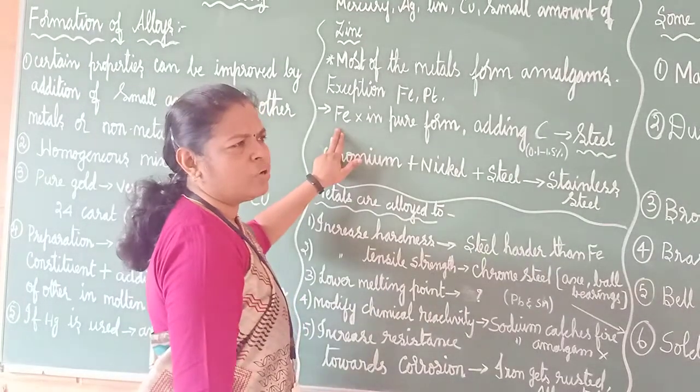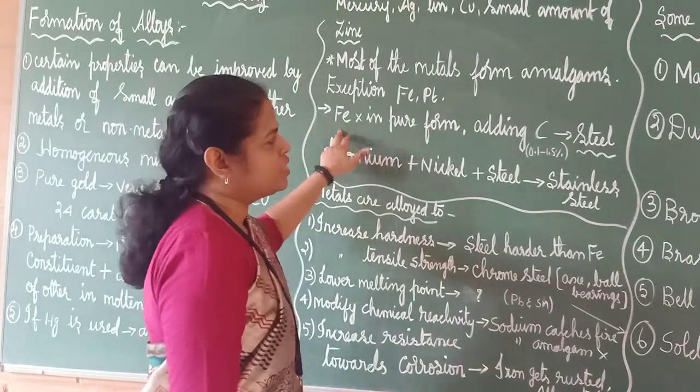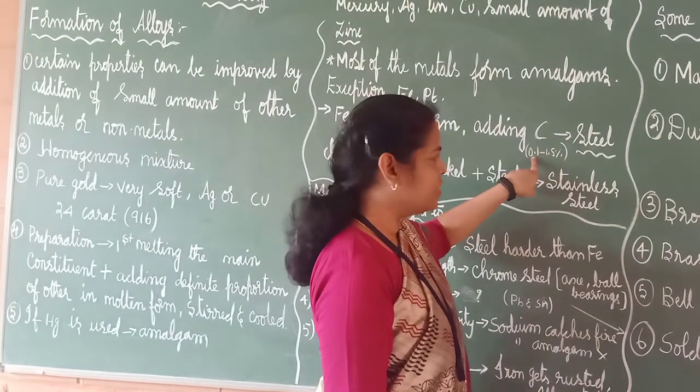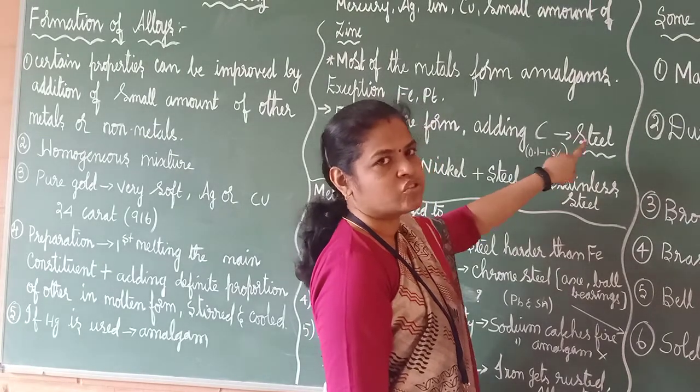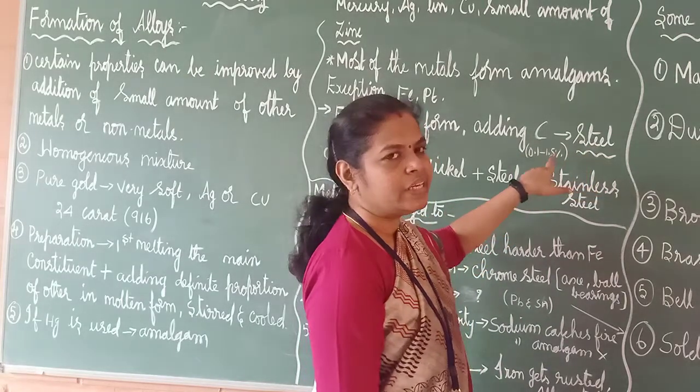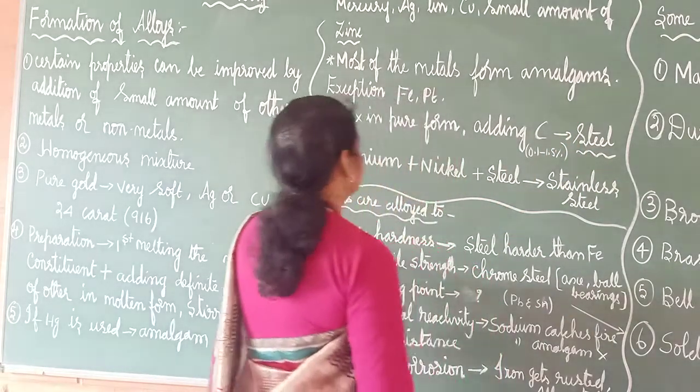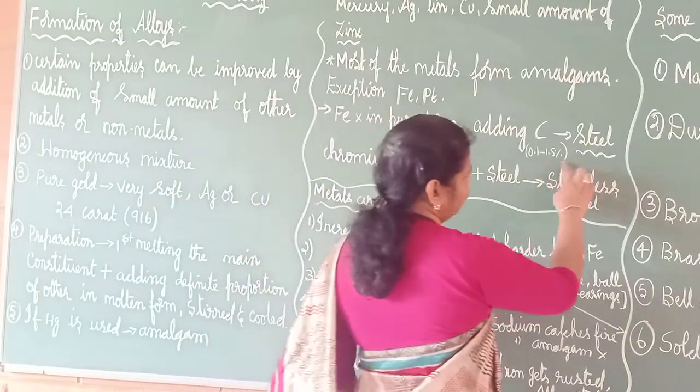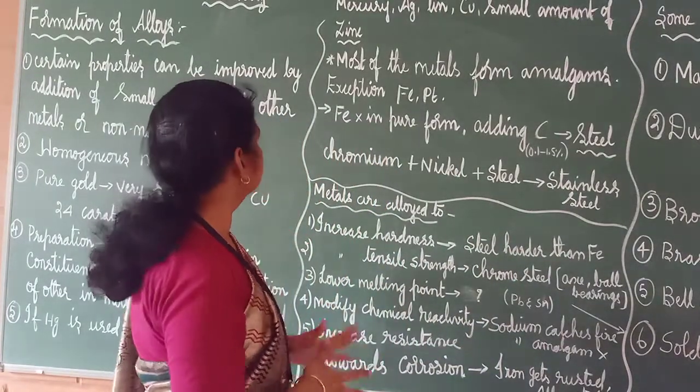And iron, if it is in the pure form, it will not be strong. What should be added? A small amount of carbon should be added. The percentage is only 0.1% to 1.5%. But this carbon will make it strong. Will make the iron strong. That is called as steel. If you add carbon with iron, then it is called as steel. So, chromium plus nickel plus steel, if you add in definite proportions, you will get what? Stainless steel. You have heard of stainless steel, that we will get. This is about alloys.